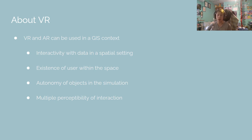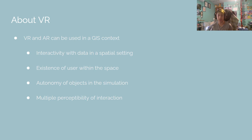By making use of AR and VR in GIS, researchers can interact with data in a spatial setting. The article cites a few main characteristics of VR tech: Interactivity — the extent to which users can operate and get feedback in the simulated environment; Existence — the extent of the user's presence in the simulation environment; Autonomy — the movement degree of objects in the environment based on physical laws; and Multiple Perceptibility — enhanced interaction between users and the system.